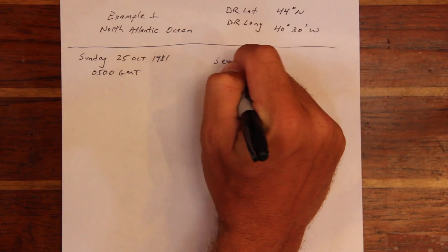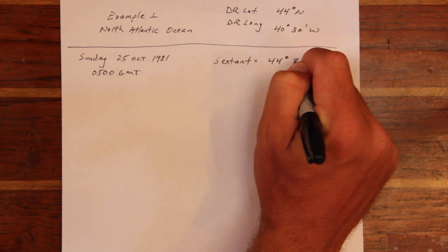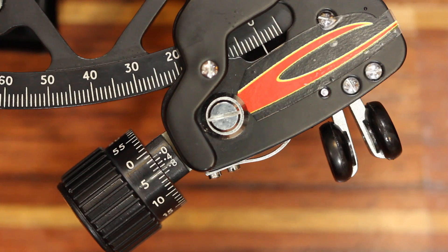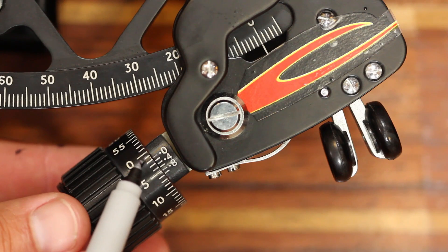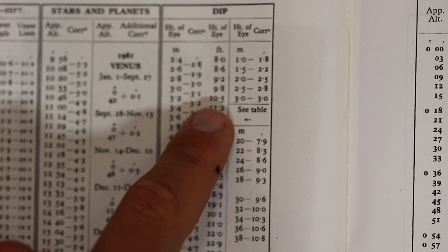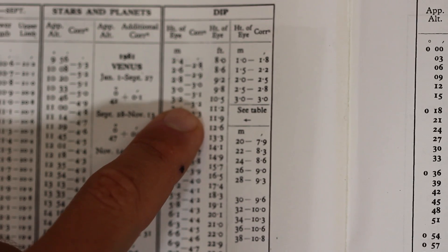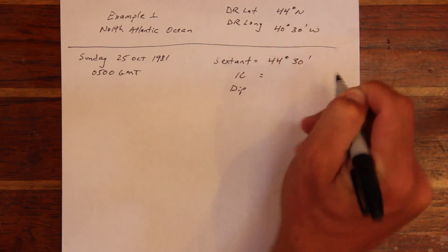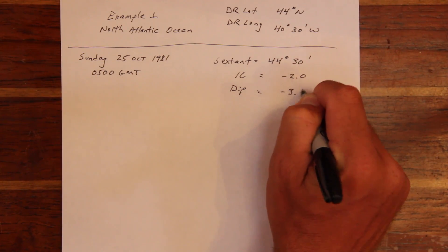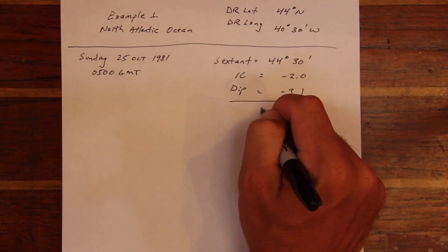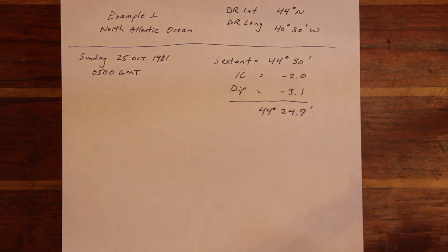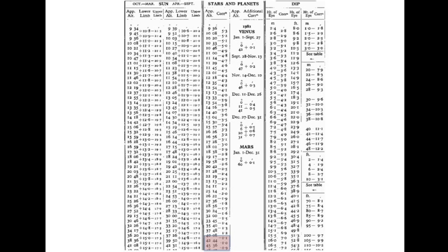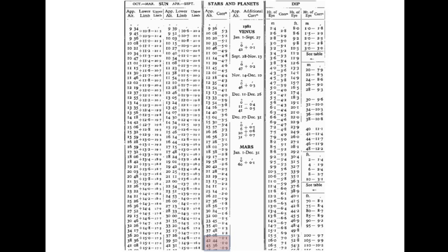Given a dead reckoning position and a time of observation, the first step is to apply our standard sextant corrections. After applying an index correction and a dip correction, we come up with an apparent altitude. As mentioned before, the apparent altitude tables for stars and planets are different than the Sun. In this case, the apparent altitude correction is 1.0.